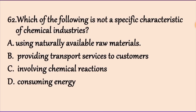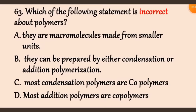Question 62: Which of the following is not a specific characteristic of chemical industry? A) using naturally available raw materials — true. B) providing transport service to customers — this is not a characteristic of chemical industry; that is transport service. C) involving chemical reactions. D) consuming energy. So the answer is B.